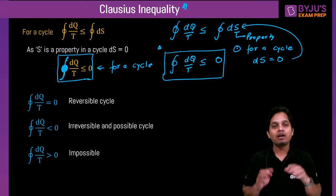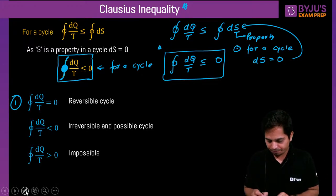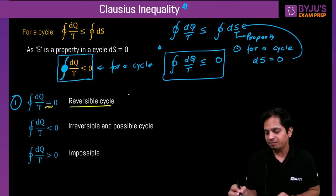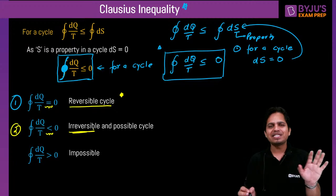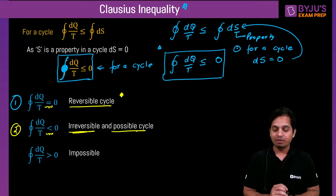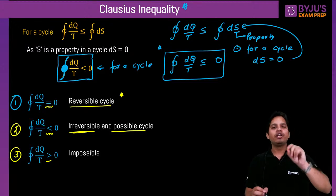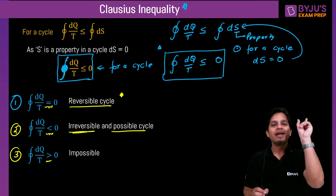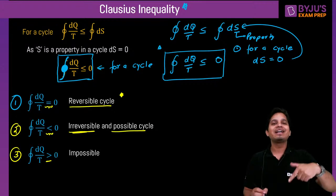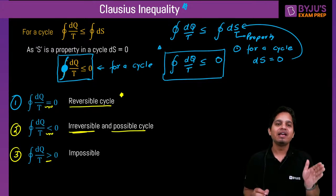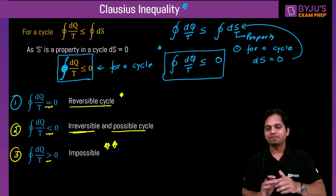Increase in entropy principle: entropy for an isolated system always increases or remains constant — it is always greater than or equal to zero. If I say isolated system, universe, or process (system plus surrounding), they are all the same. They can ask: calculate entropy for a process, for the universe, or calculate entropy generation. Entropy generation equals entropy of isolated system equals entropy of system plus surrounding, always greater than or equal to zero.